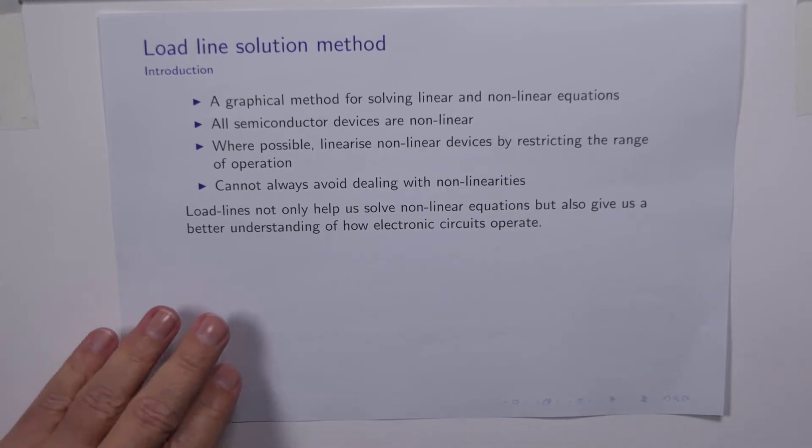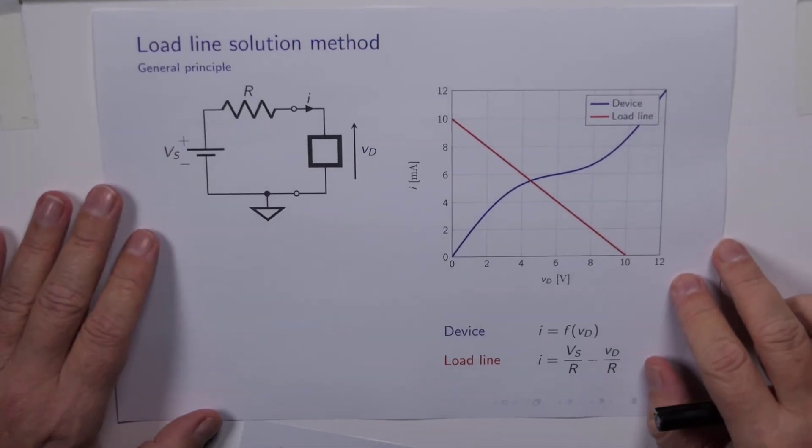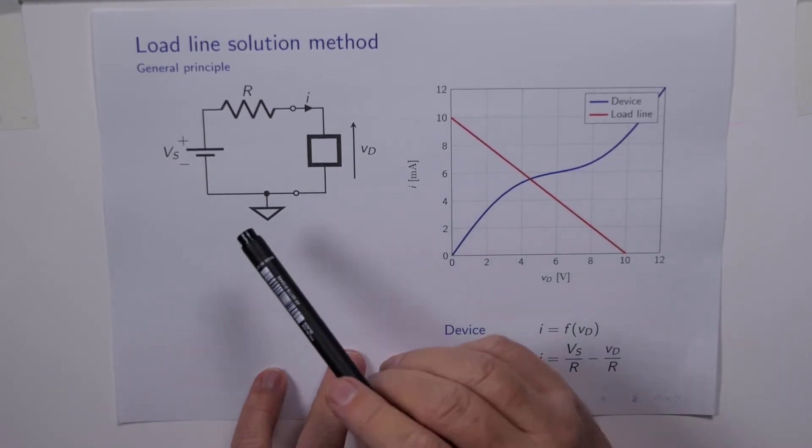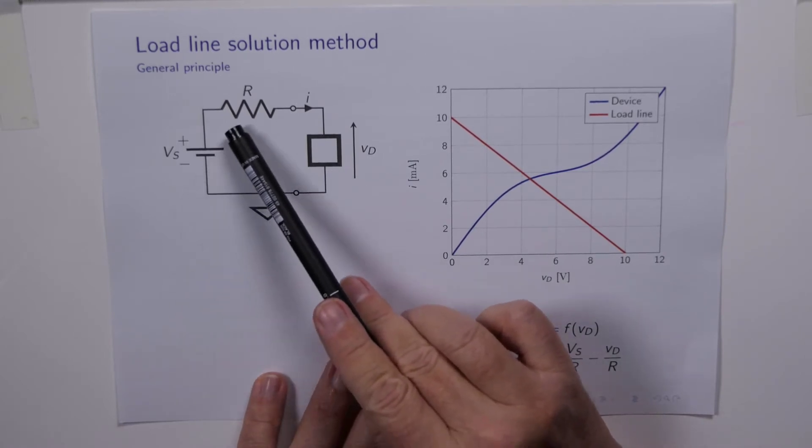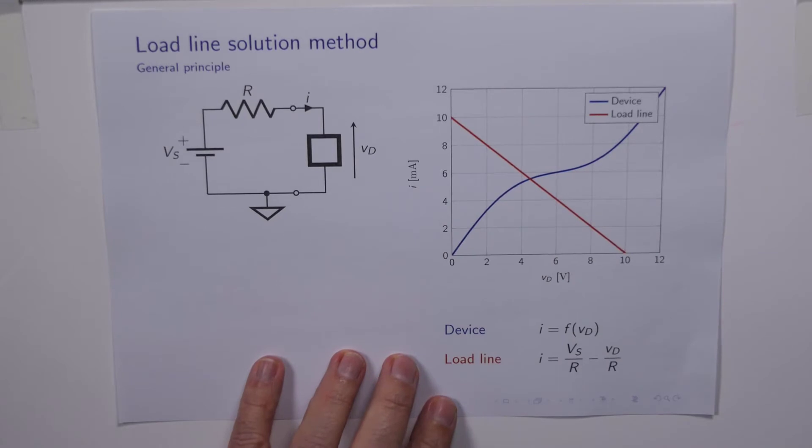So let's have a look at the basic principle. On the left hand side here, we've got a simple series circuit consisting of a voltage source, a resistor, and some device which is potentially nonlinear.